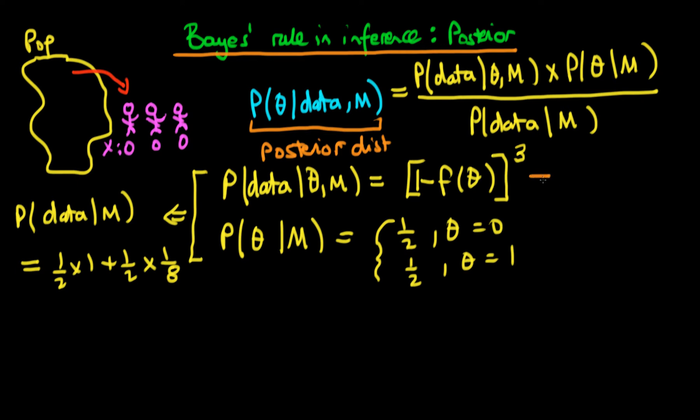So thus far, we've already found out what the likelihood in this particular circumstance is. We've also defined our prior probability here, and what we're saying in this prior probability is that we're exactly ambivalent between whether a given tribe doesn't have the disease or they do have a disease. So there's a probability of half in both of those circumstances.